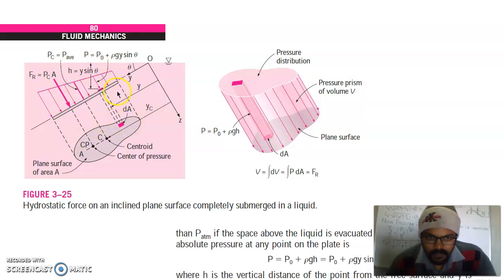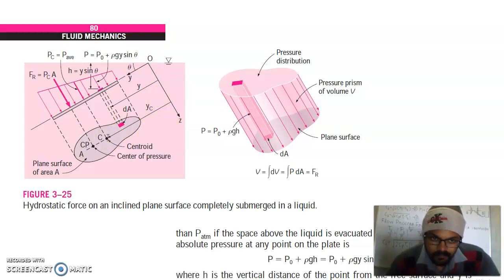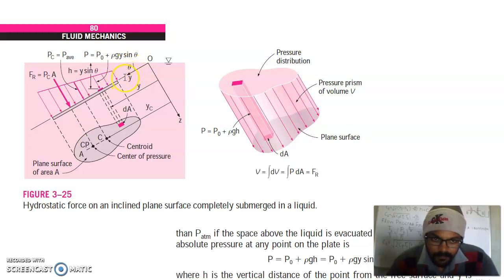The plate is submerged at some inclination angle θ, and distance along the plate is y. Take a small area dA at distance y from the x-axis. C is the center of the plate, and CP is the center of pressure. The height h of water above the area element dA and the inclination θ give: if the element is at distance y, then the vertical depth is h equals y·sinθ.